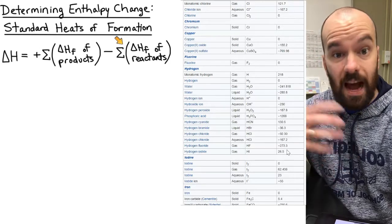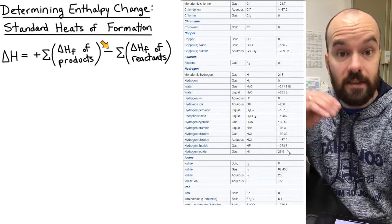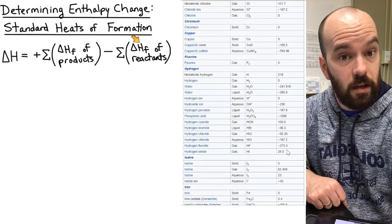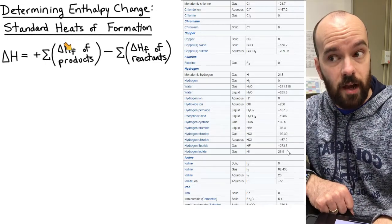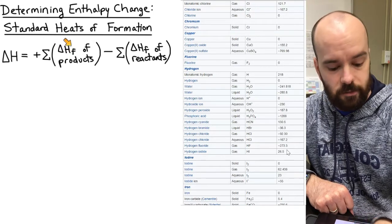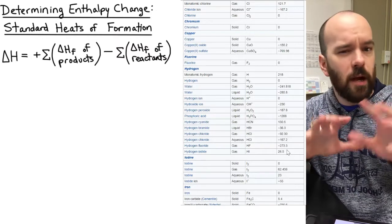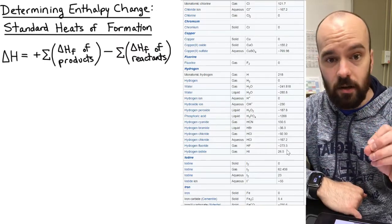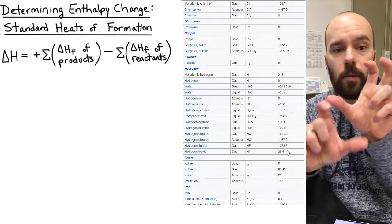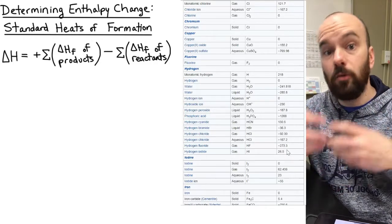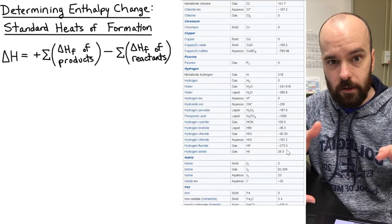Reactants, however, are not being formed — we're doing the opposite, breaking them down. So we change the sign for the heat of formation of reactants: if a reactant's heat of formation is negative, it becomes positive, and vice versa. This is really an extension of Hess's law — if you added up all the formation reactions and manipulated them so intermediate species cancel, you'd arrive at the same result. But you don't need to work through that theory to answer AP exam questions.